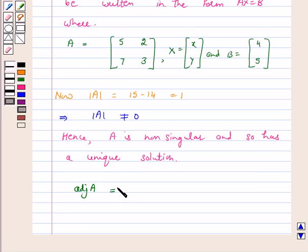We know that for a square matrix of order 2 by 2, adjoint A can be obtained by interchanging a11 and a22, and by changing signs of a12 and a21, giving us [3, -2; -7, 5].